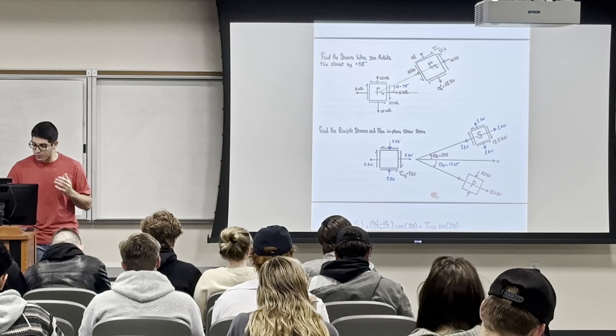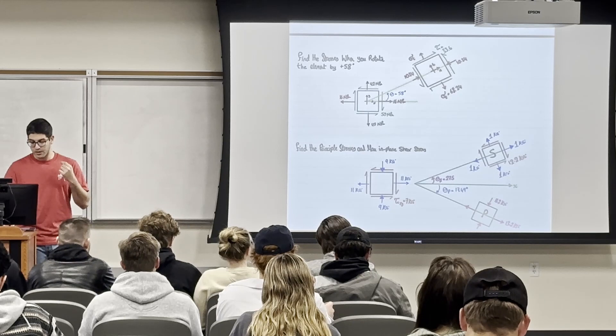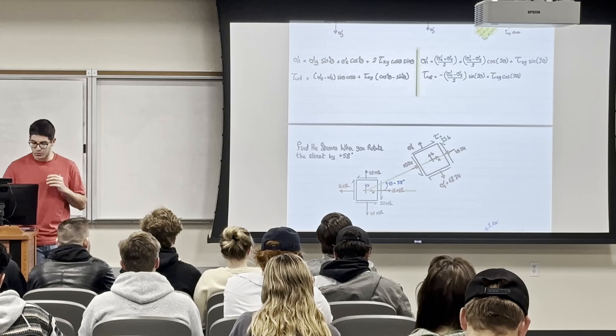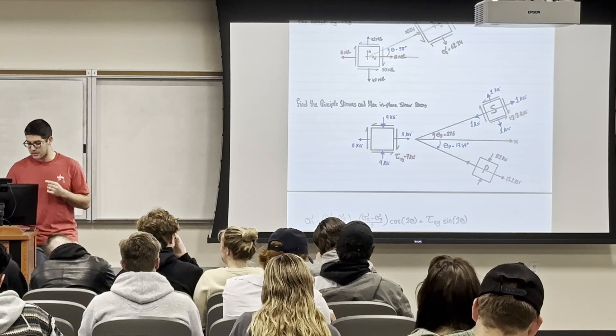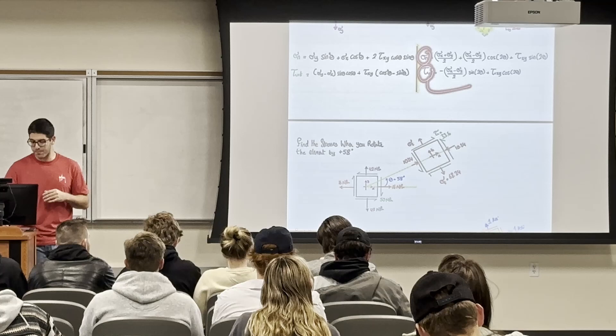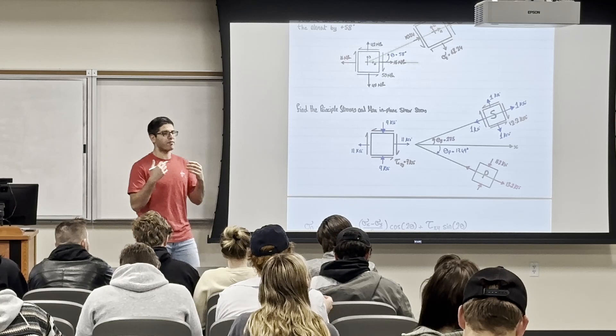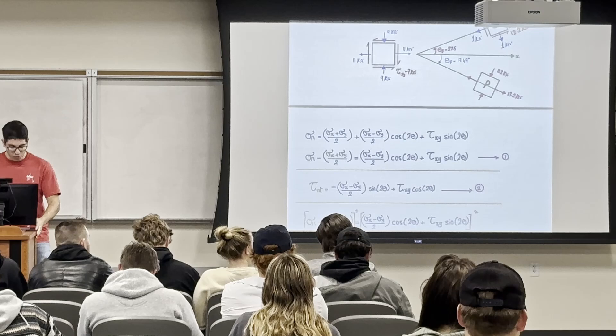Mohr's Circle is another method. We already know what Mohr's Circle is going to do: it tells us the stresses at any given theta, which you can do with those two equations, and it also tells us the maximum stresses — principal or shear — which you practiced yesterday using the derivation. The results of Mohr's Circle are not new; it is just another method — a graphical method.